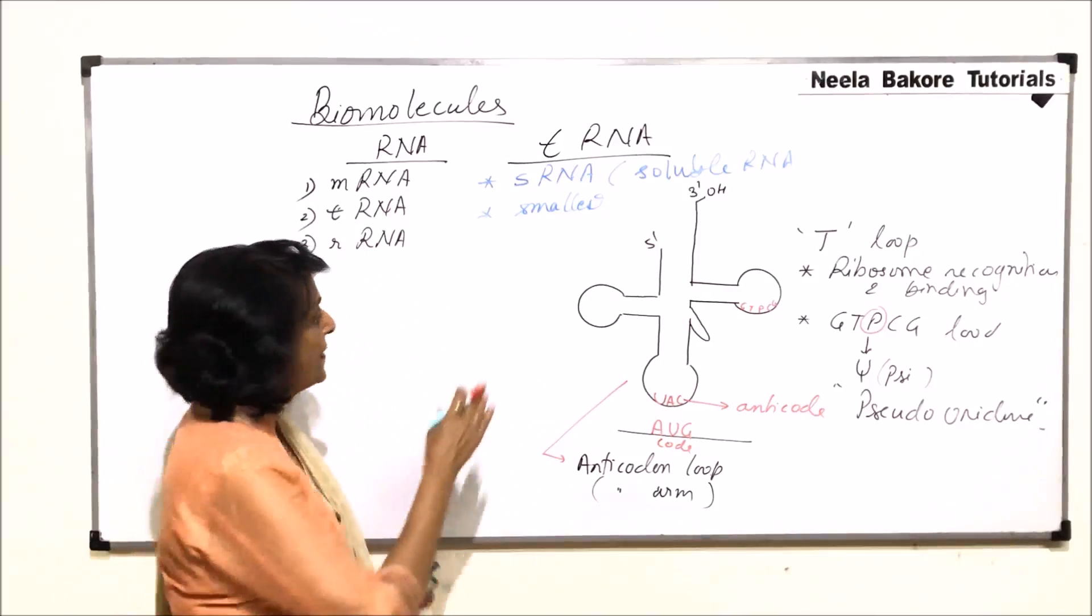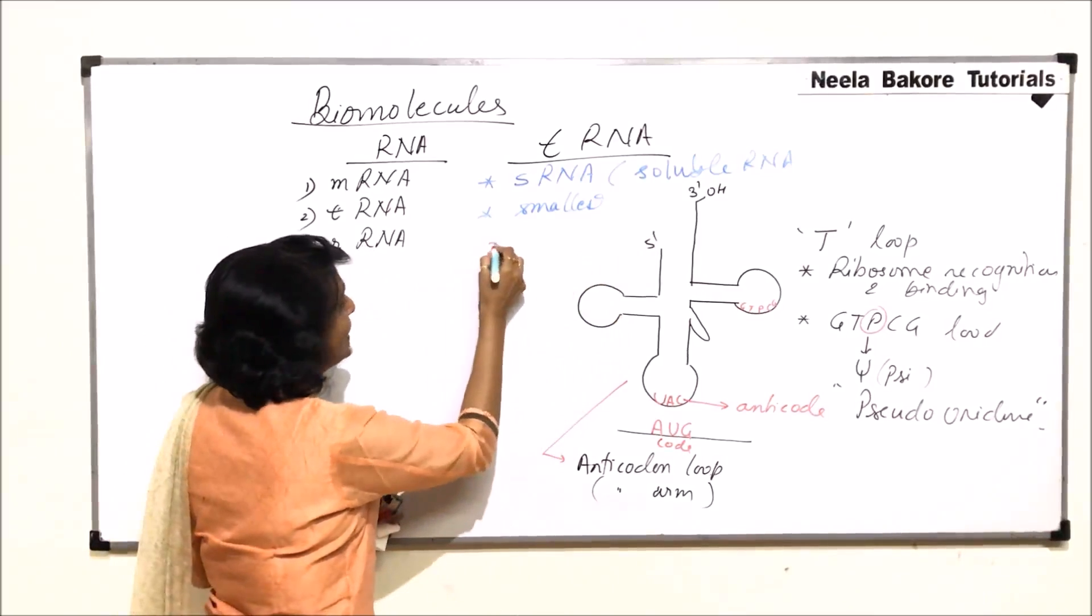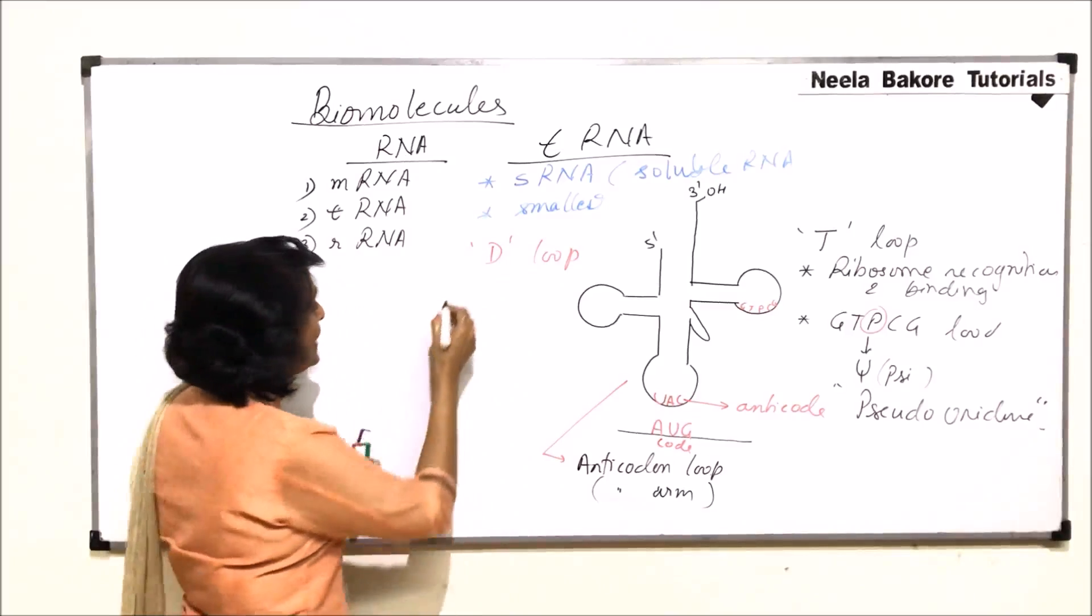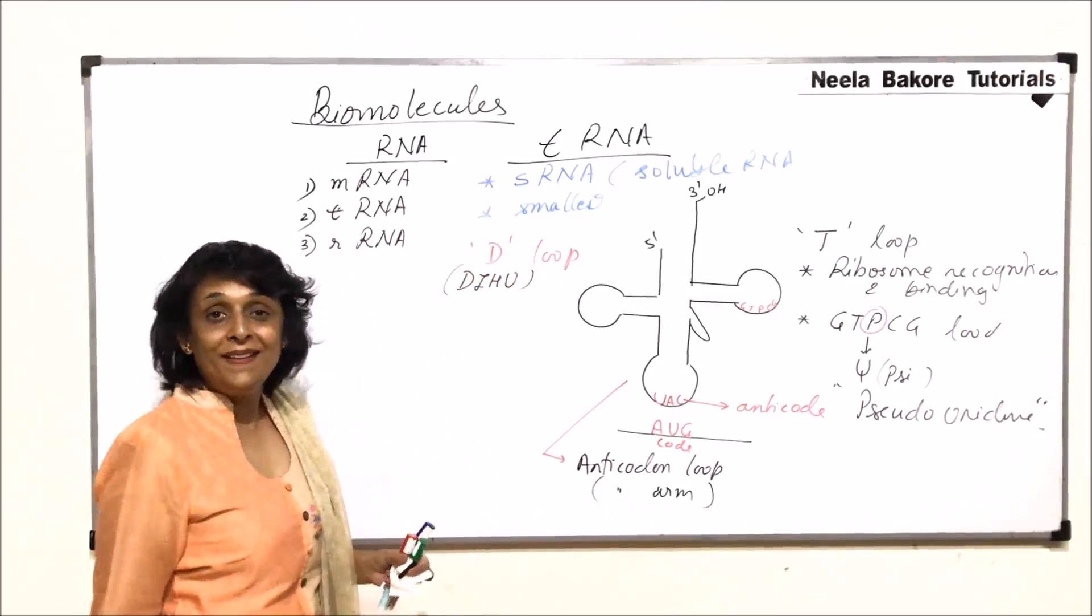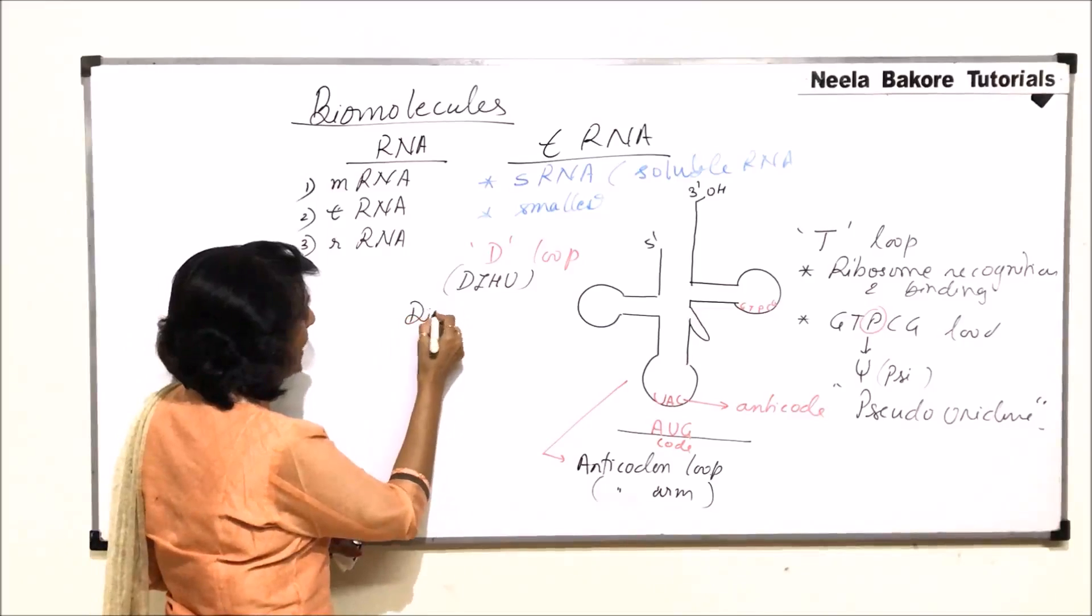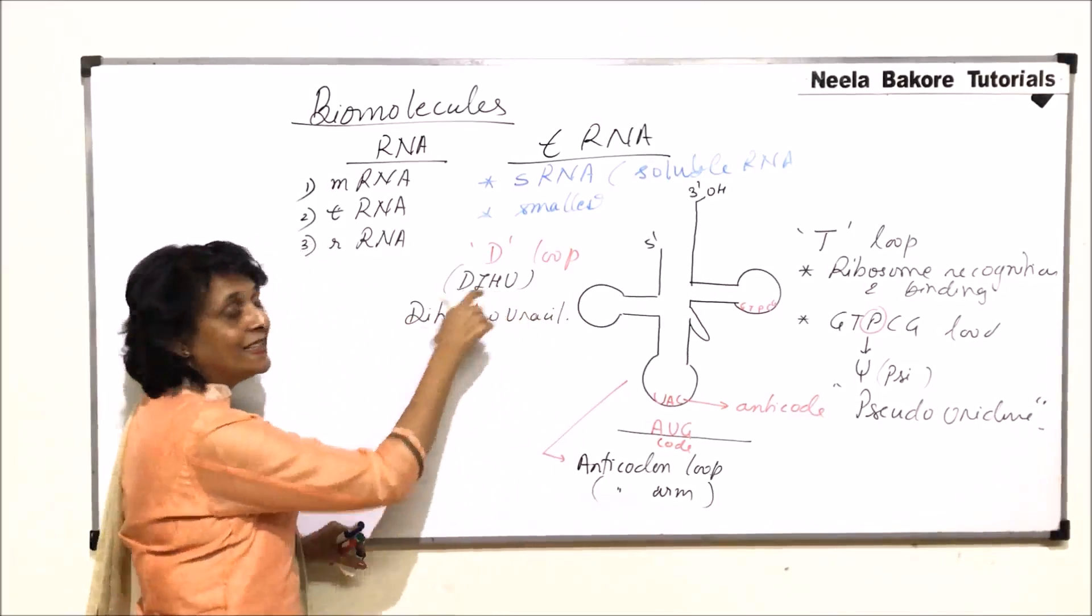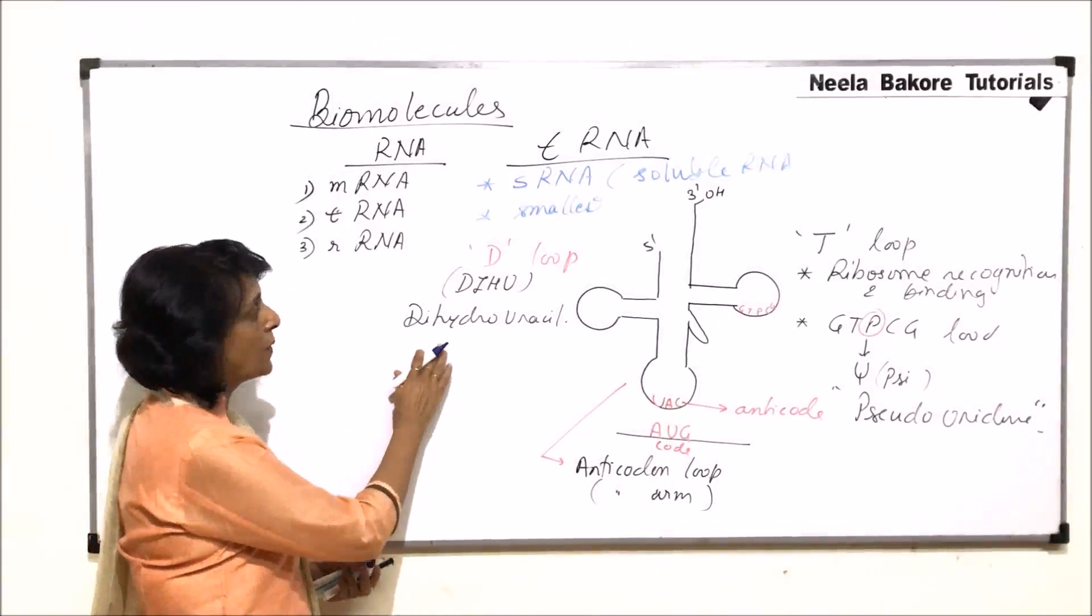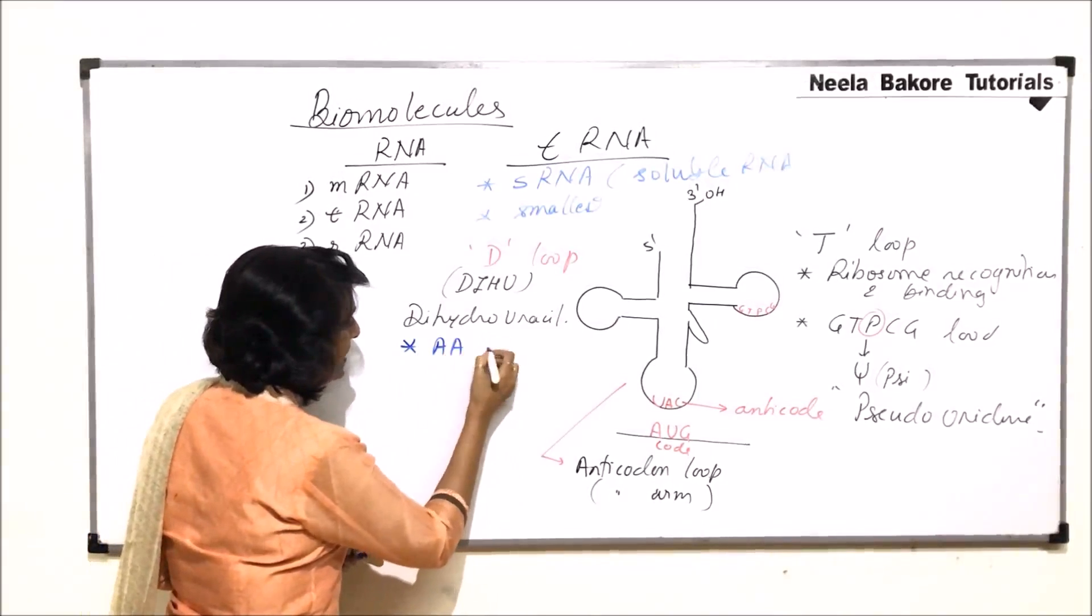The loop which is out towards the fifth end is known as D-loop or it is also known as D-I-H-U loop. Reason here also uracil is modified and it stands for dihydrouracil and that is why D-I-H-U loop. The function which is performed by this D-loop is amino acid identification.